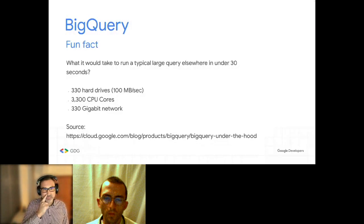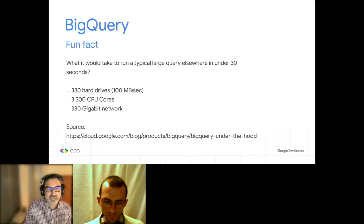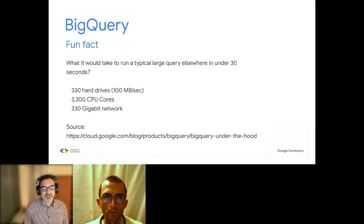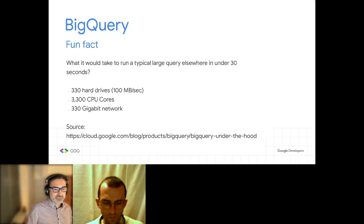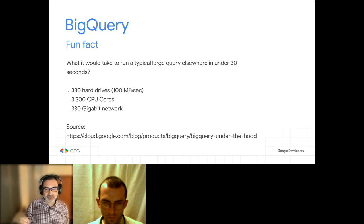A fun fact about BigQuery: if you run a typical large query on just a few terabytes of data, you would actually require around 330 hard drives, 3,000 CPU cores, and about 330 gigabytes of network. This comes from a Google blog post that explains exactly what is happening behind the scenes when a query runs.